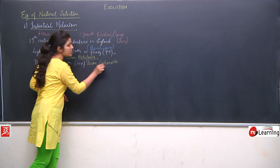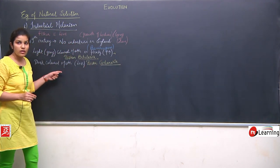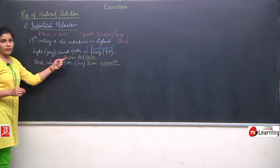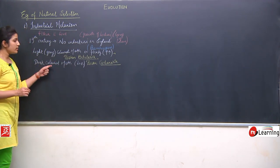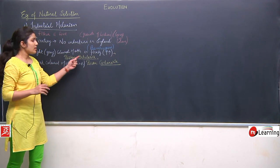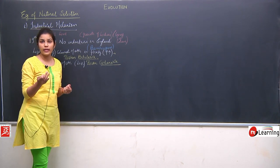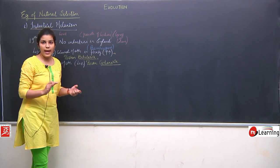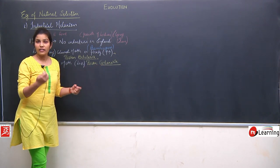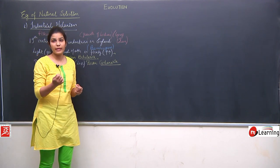The scientific name of the light coloured moth is Biston betularia, and the dark coloured moth is Biston carbonaria. The light coloured moth was present in plenty and the dark coloured moth was present in less number, because the light coloured moths could show camouflage with their lighter background.